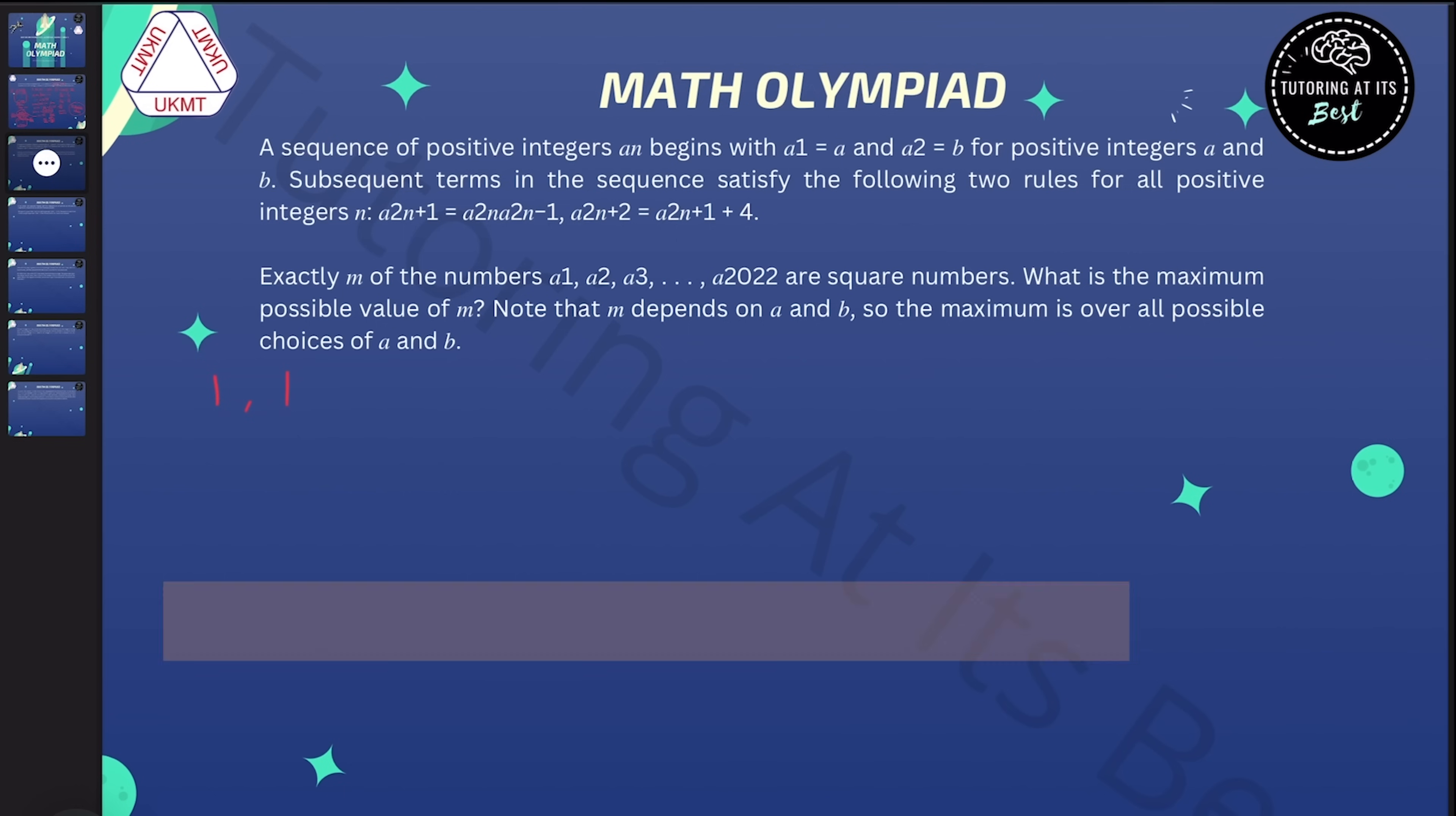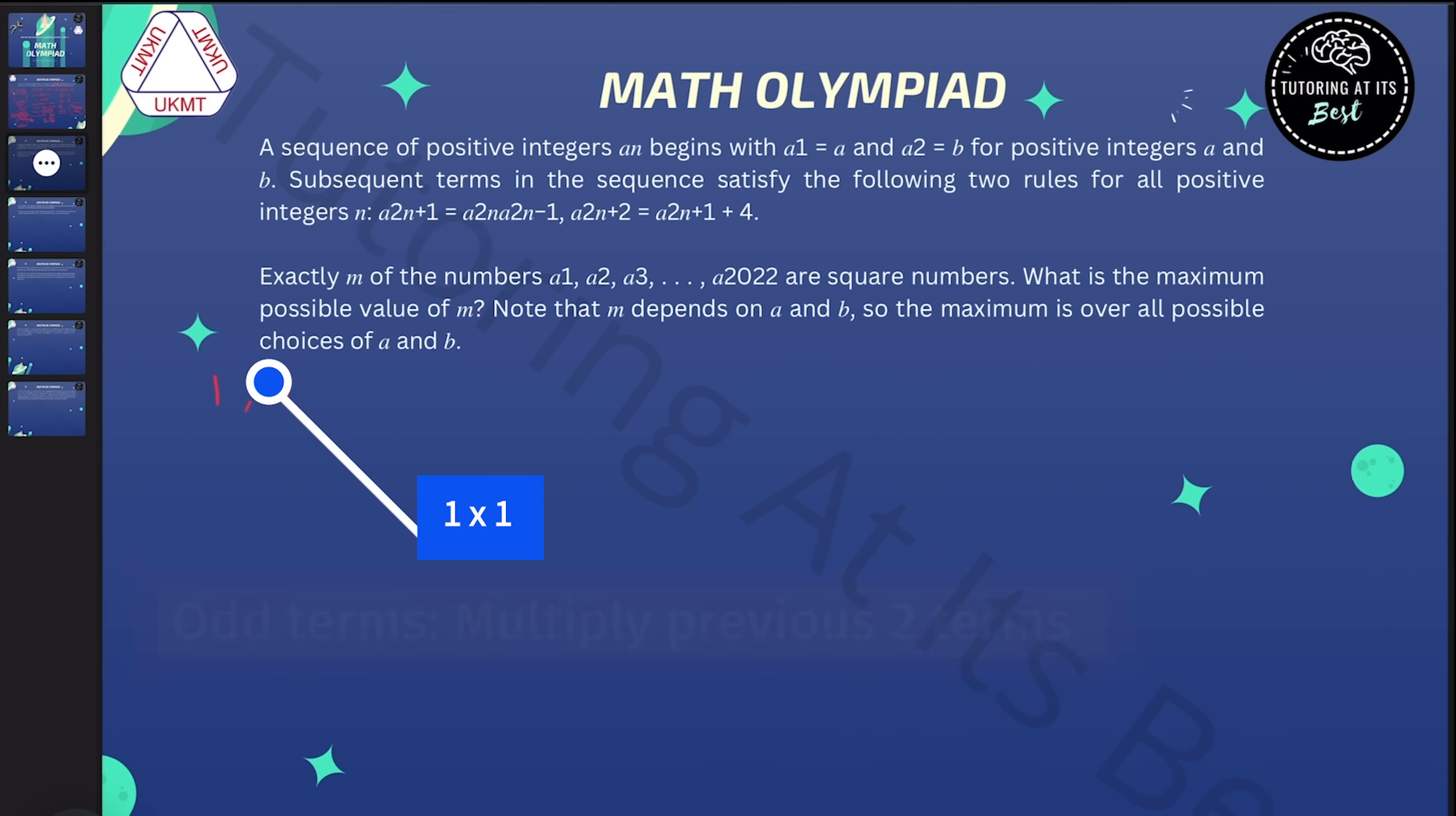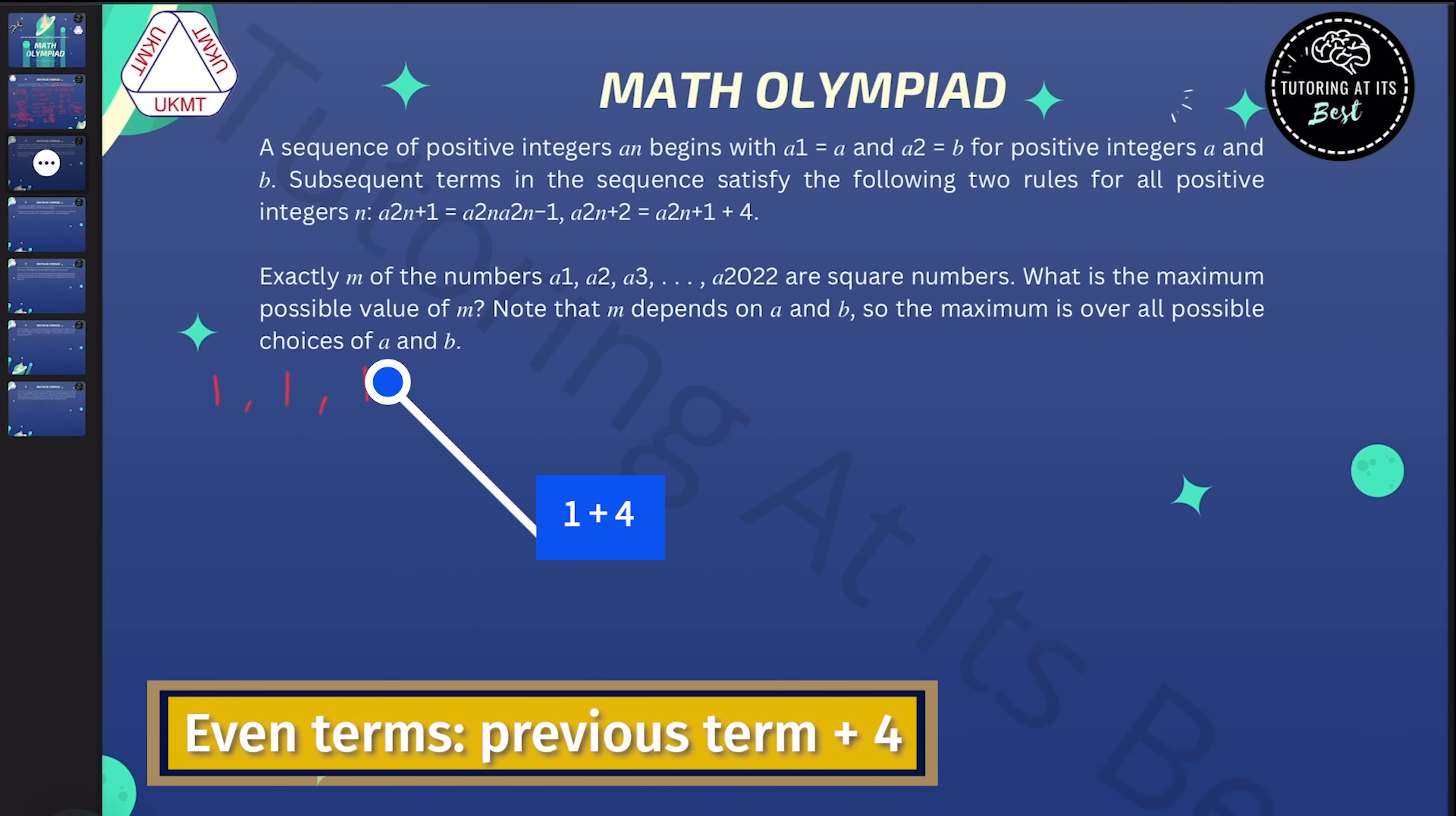Now the rule says that the odd terms of the sequence, like a3, are formed by multiplying the previous two terms. So a3 will also be 1 as 1 times 1 is 1. The even terms of the sequence are formed by adding 4 to the previous term. So a4 will be 1 plus 4, which is 5.